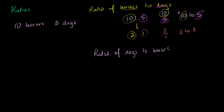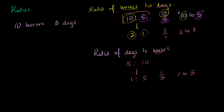What's the difference between horses to dogs and dogs to horses? Since I've switched the ratio, I switch the numbers. For every 5 dogs I have 10 horses. Dividing both by 5, the ratio of dogs to horses is 1 to 2. The general convention is to get your ratio or fraction into its simplest, reduced form.